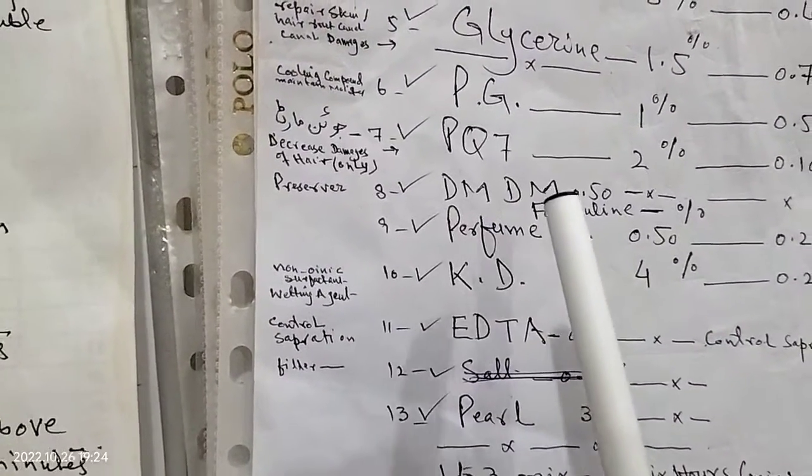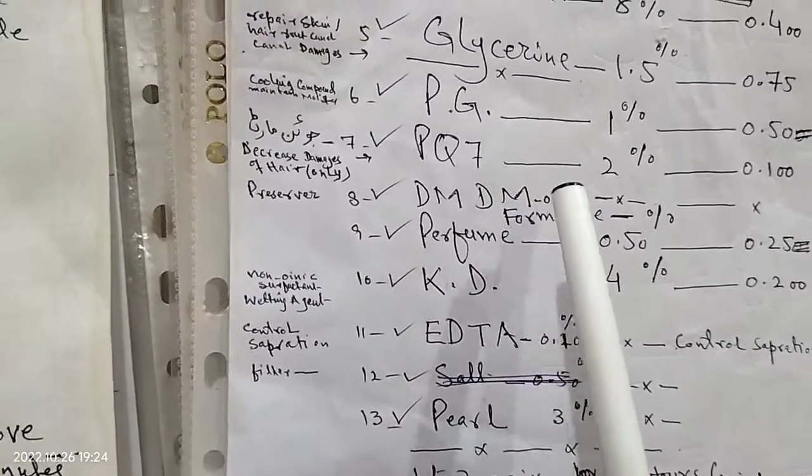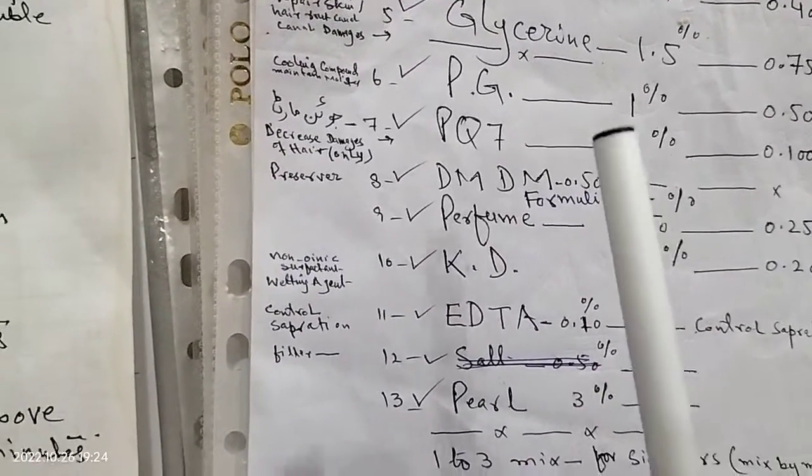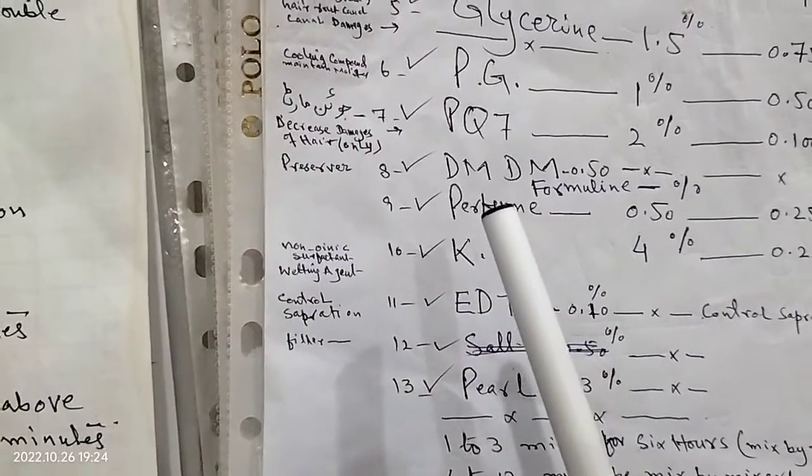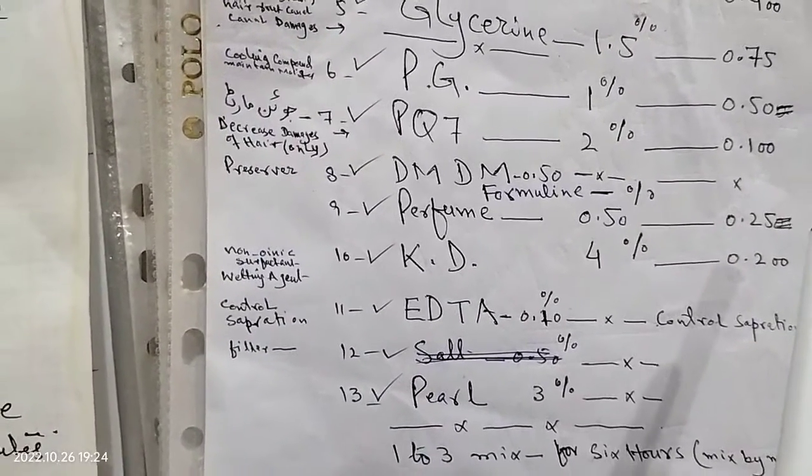DM DM for separation, control separation, 50 gram. Perfume half kg, 25 gram.